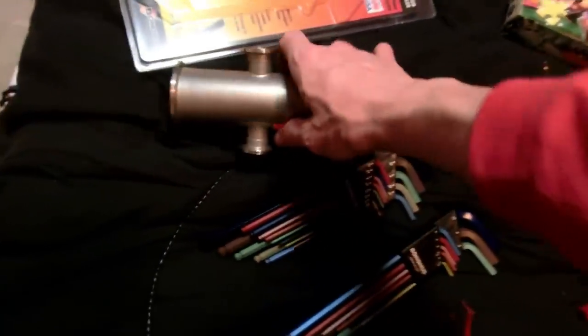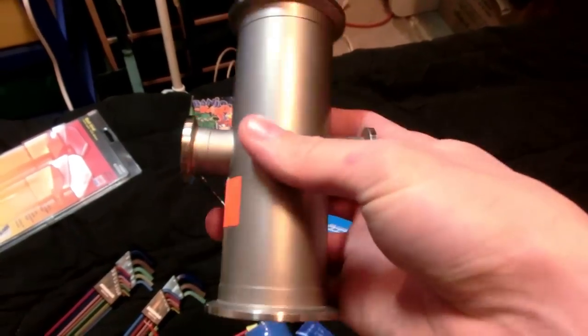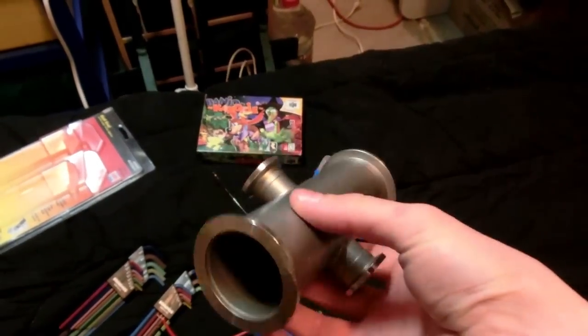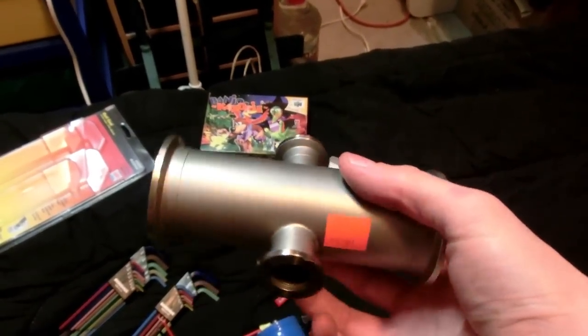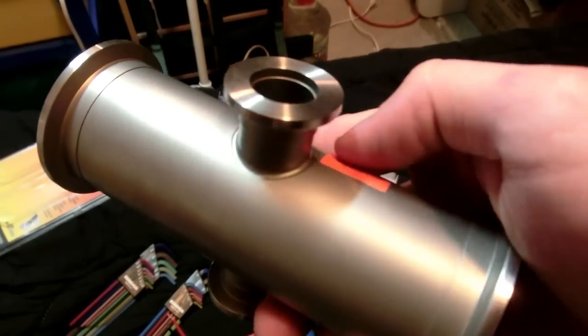I also got this at Halted. I've been wanting to build a scanning electron microscope sometime. I think this would be a perfect thing for the vacuum chamber. This was $15. I can guarantee this probably cost a lot more than $15 to machine and weld. Look at that awesome weld there.